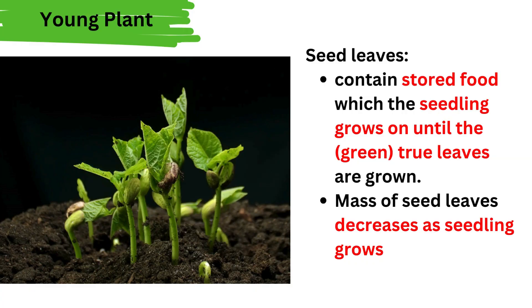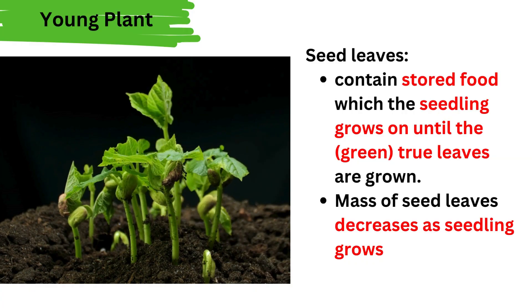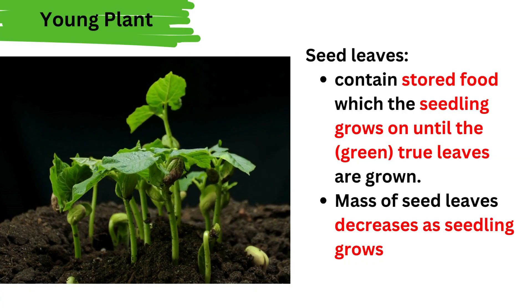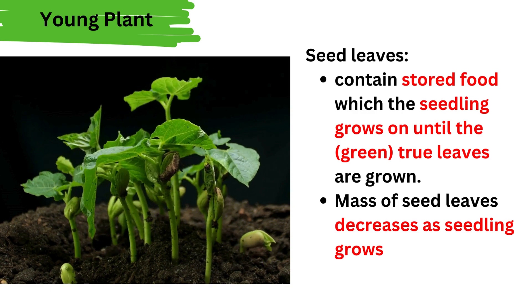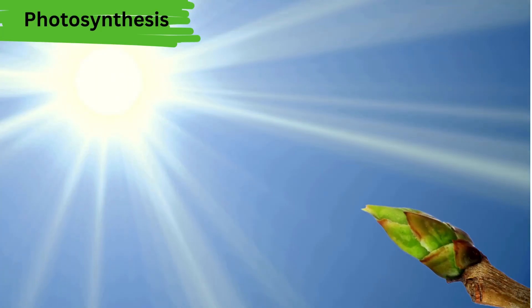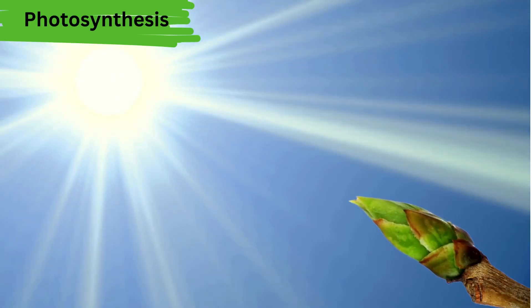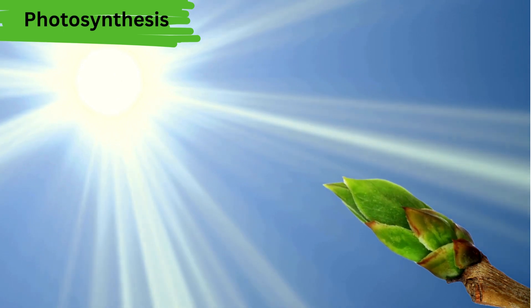Initially the seed leaf gives the young plant food. With time, the true leaves grow, so the plant can make its own food through photosynthesis — using the sun to make food. That's genius!